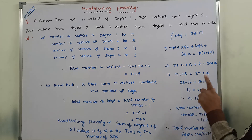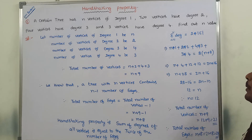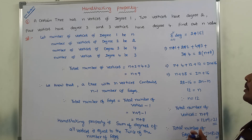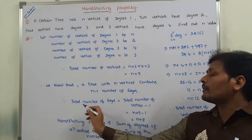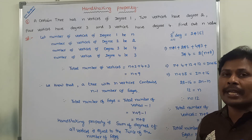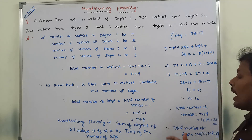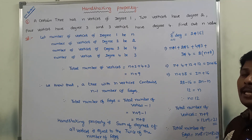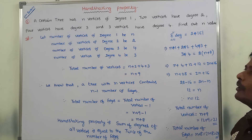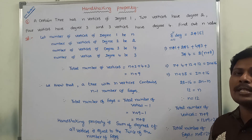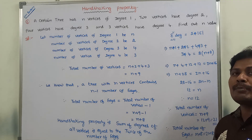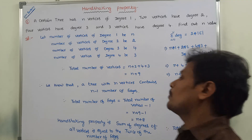So 21 vertices and 29 edges are present in the tree. In this way, we solve the given problem using the handshaking property to find the total number of vertices in the given graph. Thank you for watching. If you like this video, please click the like button, share it with your friends and classmates, and please subscribe to our YouTube channel.